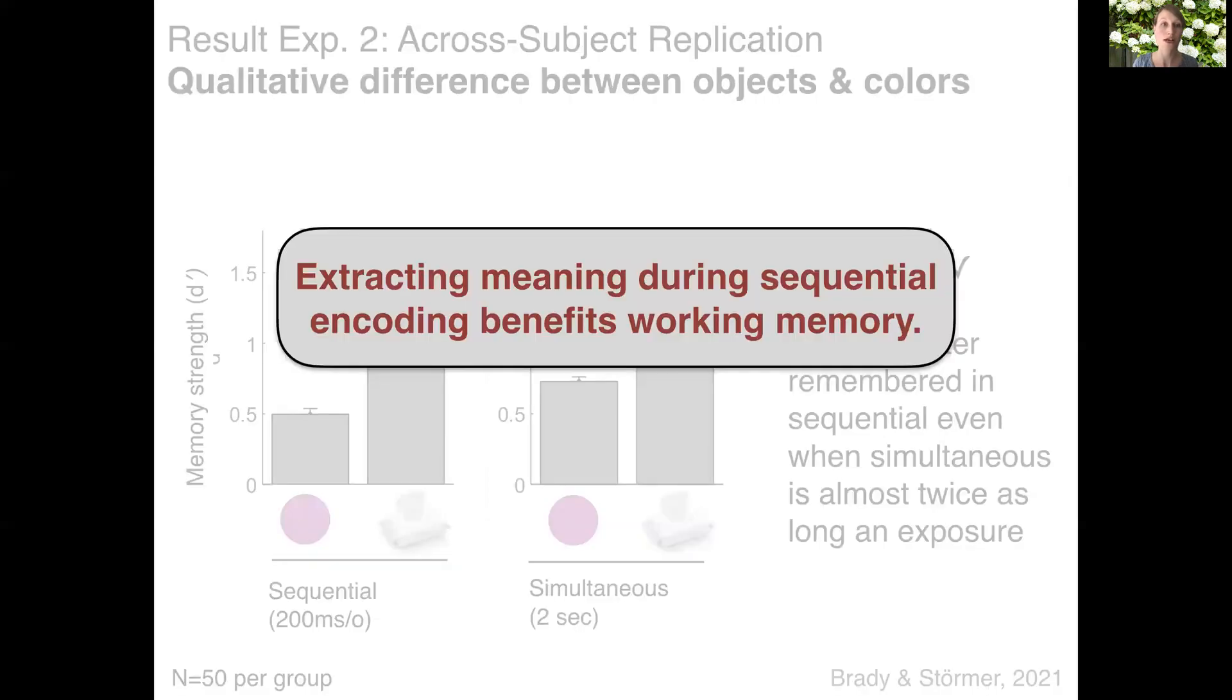And so what this suggests is that sequential encoding allows participants to extract semantics and meaningfulness from the objects, which then drives the benefit in working memory performance.